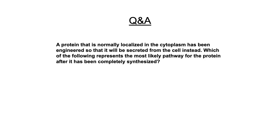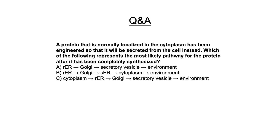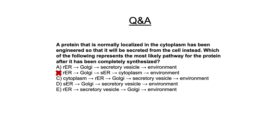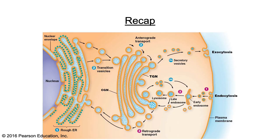The final question: a protein normally localized in the cytoplasm has been engineered to be secreted from the cell instead. Which represents the most likely pathway after it has been completely synthesized? This follows the method we discussed — how it moves from the ER to the Golgi to secretory vesicles and then to the environment — so it was the very first answer option. Here is a picture that recaps everything we've learned about the transport of proteins through the endomembrane system — from inside the cell at the ER all the way to the plasma membrane, as well as the entering of materials through endocytosis being used by the rest of the endomembrane system.